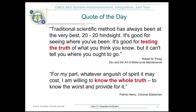I've been reading this book, Zen and the Art of Motorcycle Maintenance, lately. It's a very interesting book, more philosophical than anything else. He does get into what it means to be a system and how you look at a system. At one point he says that traditional scientific method has always been, at the very best, a 20-20 hindsight. It's good for seeing where you've been, good for testing the truth of what you think you know, but it can't tell you where you ought to go.